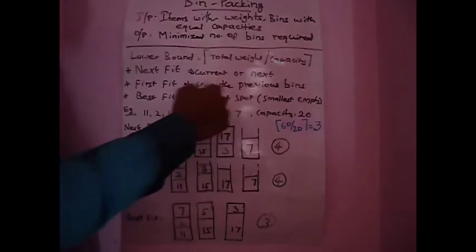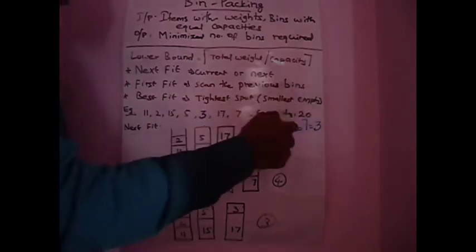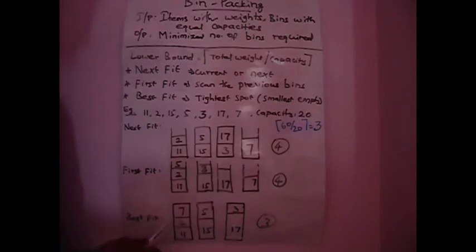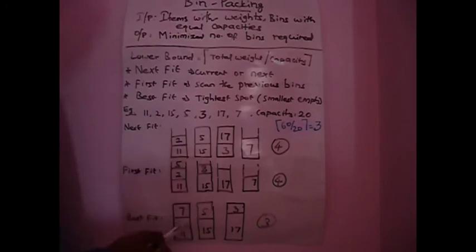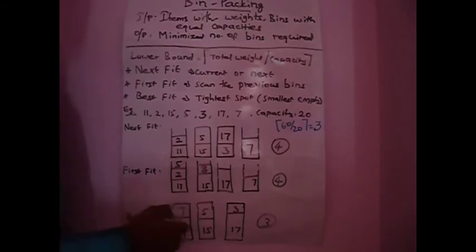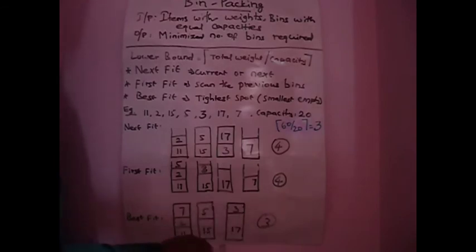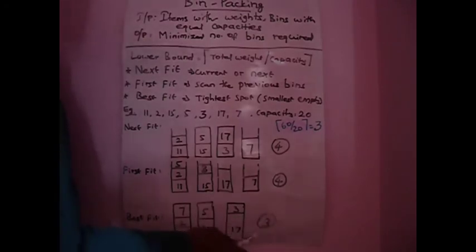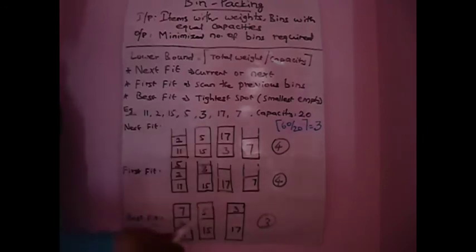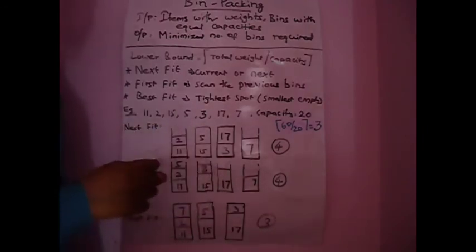Best Fit walkthrough: it tries to find the tightest spot to place each item, leaving only the smallest empty space remaining in each bin. Items 11, 2, and 15 are placed; then 7 is placed where it is the tightest fit without leaving any empty space. Items 15 and 5, and 17 and 3, are placed together as tightest fits. Best Fit uses only 3 bins in the best case.